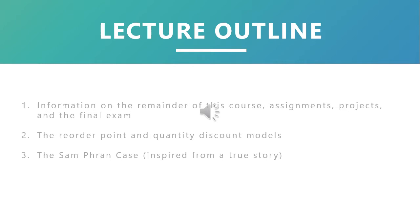So this is the plan for today. I'll talk about the remaining chapters in this course as well as the assignment you'll get at the end, and we'll try to see how to organize projects and the final exam. We have two remaining variants of the economic order quantity model to see: the reorder point and quantity discount models. The last part of this course will be about the Sampran case, which you can find on e-learning. It's called the inventory management case.